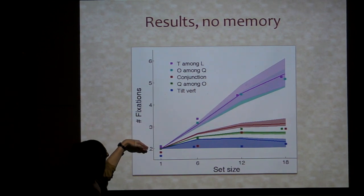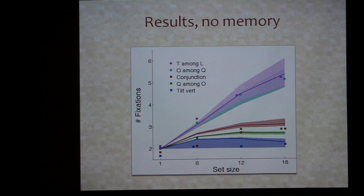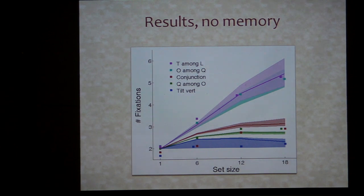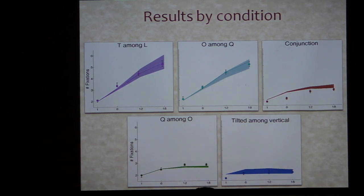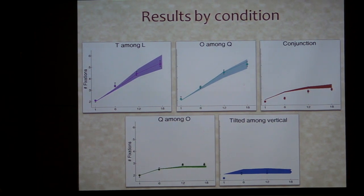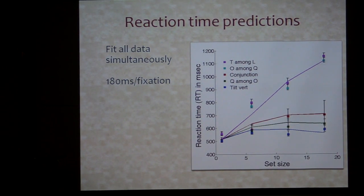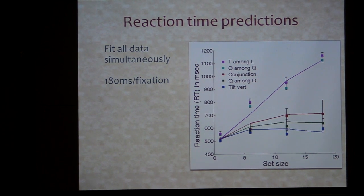If you do this, the actual number of fixations people do on average are represented by squares. The predictions of the model with no memory — meaning you only use the current instant to decide where to go — are shown by solid lines, and the shaded regions are confidence intervals on the model predictions. It looks pretty good. Furthermore, you can then say: I don't want number of fixations, let's predict reaction time. You find the best-fit number of milliseconds per fixation to map onto reaction time, and you get about 180 milliseconds per fixation — a perfectly reasonable number that matches what people find.